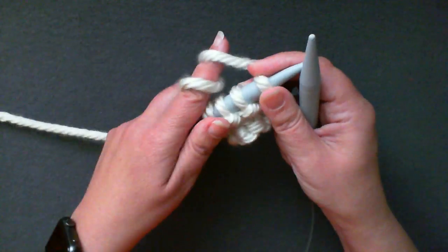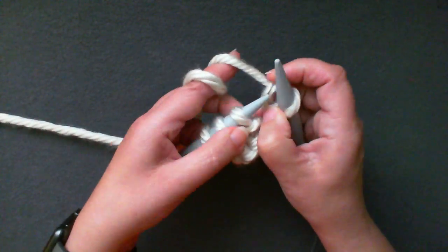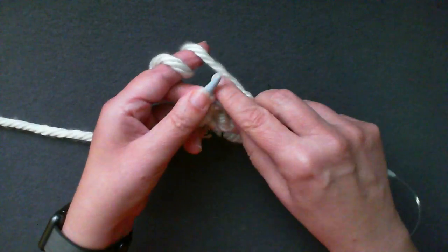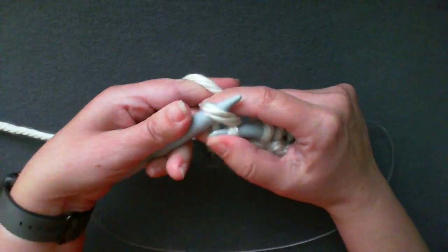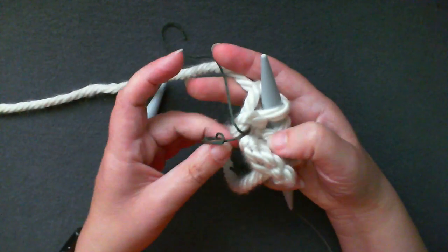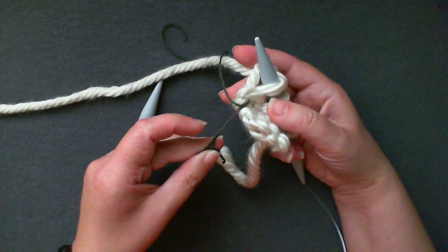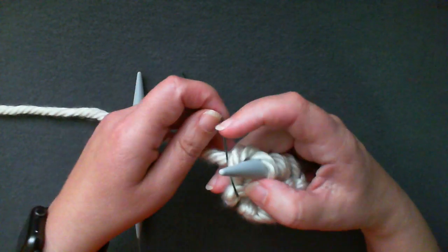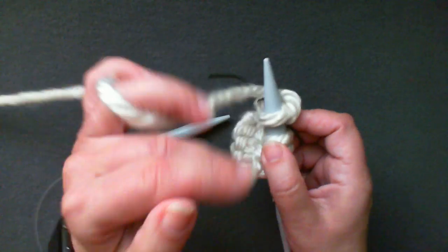You will continue to weave the waste yarn in on both edges of your work in this manner, making sure you use the same end of the waste yarn to work your way up. You'll notice I've made a yarn butterfly to hold my yarn and to differentiate the two ends of my waste yarn.